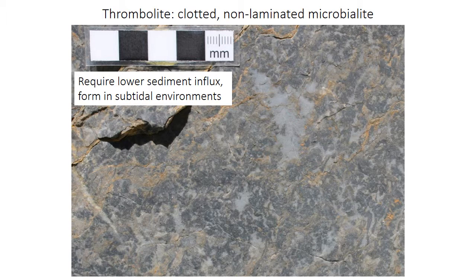Non-laminated microbialites that often have a clotted appearance — little blobs of darker and lighter gray colored material — are called thrombolites. 'Thromb' means clotted, and so the clotted appearance gives them this name. In thrombolites, trapping and binding is probably less important, and precipitation within the biofilm dominates deposition instead. Thrombolites probably form in areas with lower sediment input and are more common in subtidal and reef environments.